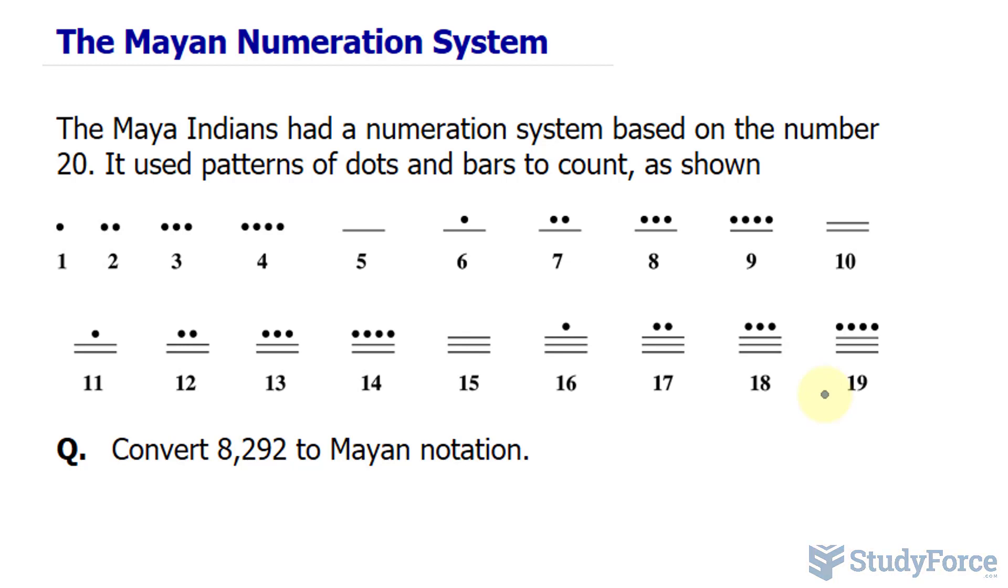The odd thing about the numbering system is that even though it's based on base 20, the place values don't go up in powers of 20, as you saw with the Babylonian system where each place value represented a power of 60. The twist is that they do for the first two rows, but after that the Mayans used multiples of 360 in place of 400, 20 times 20 for example.